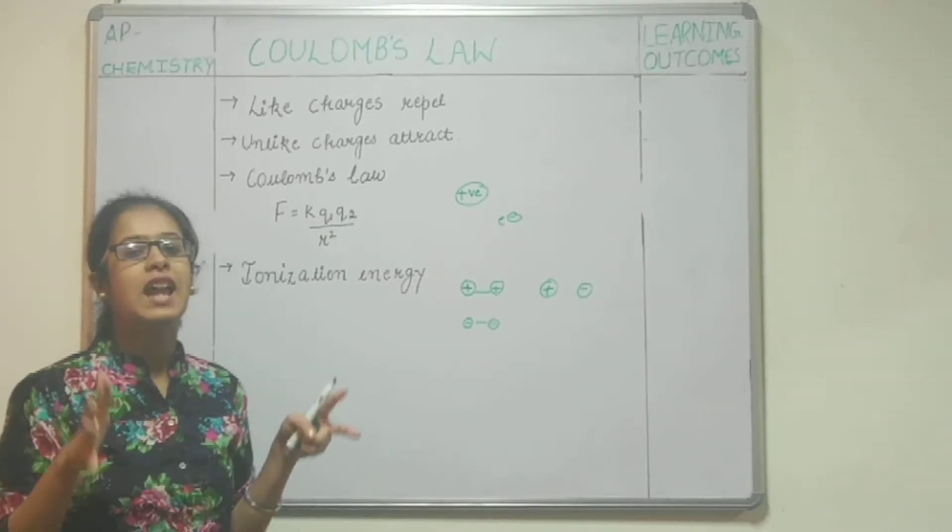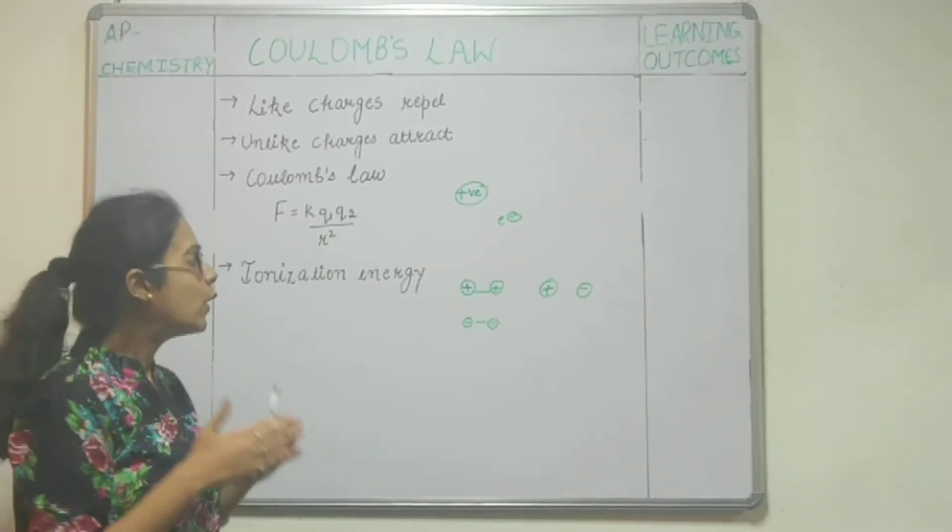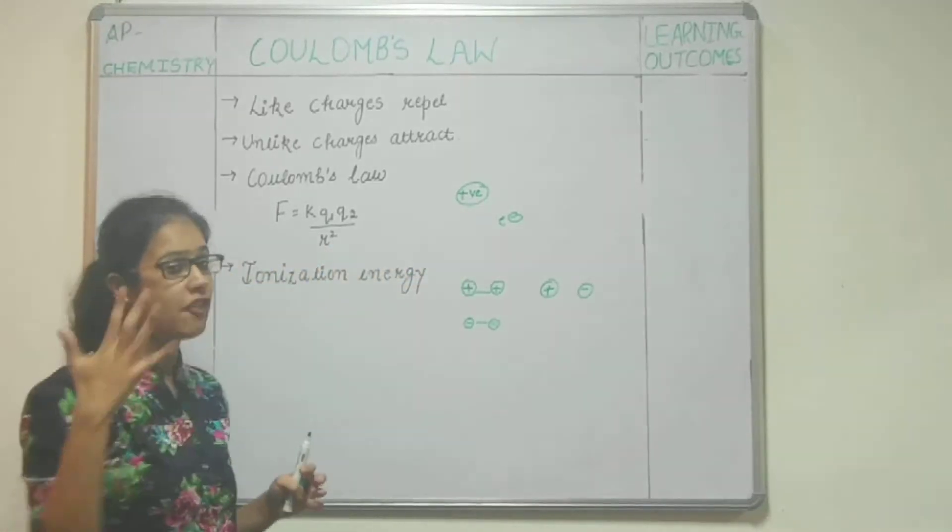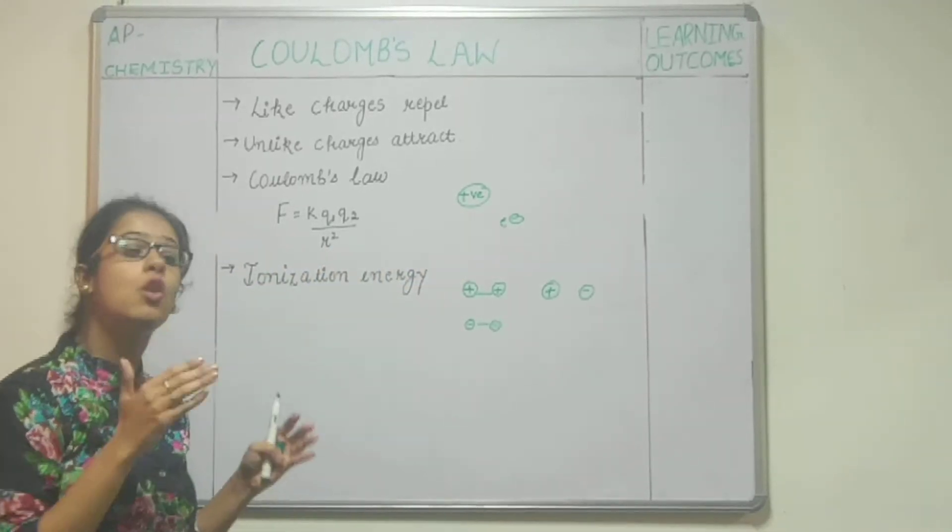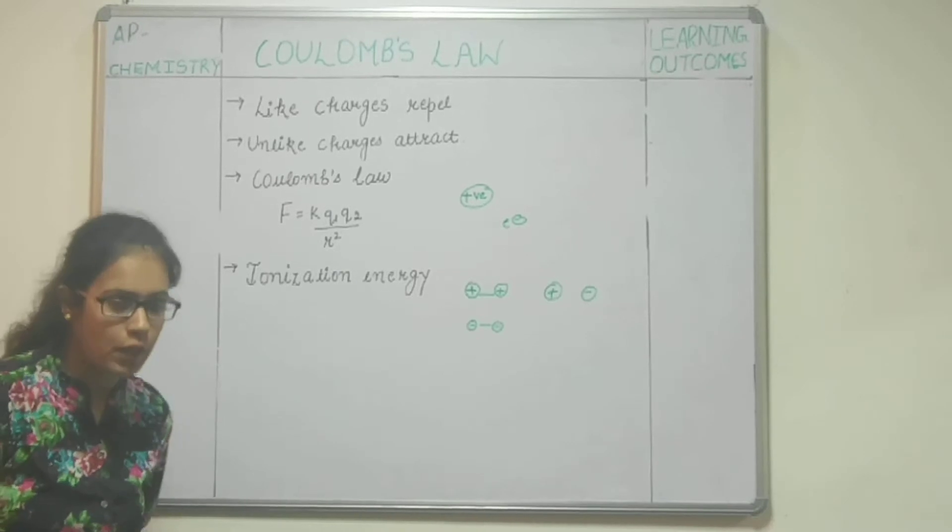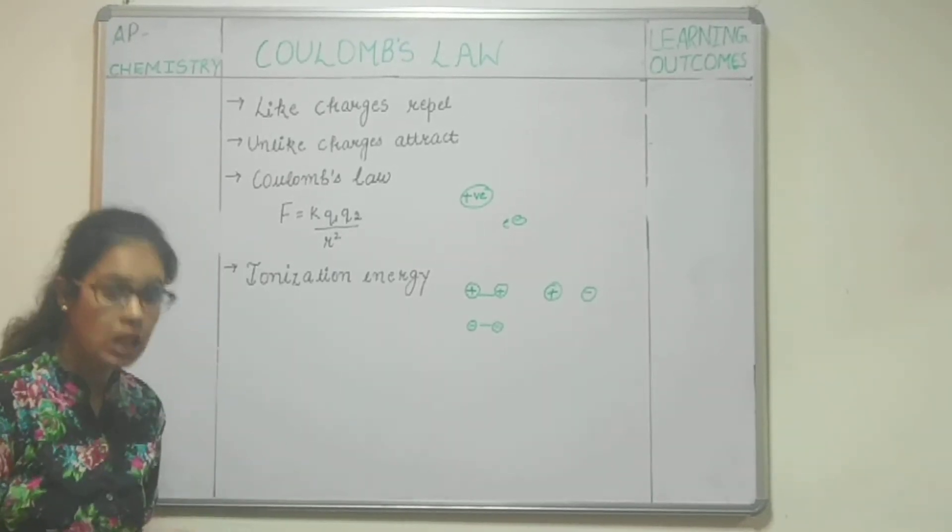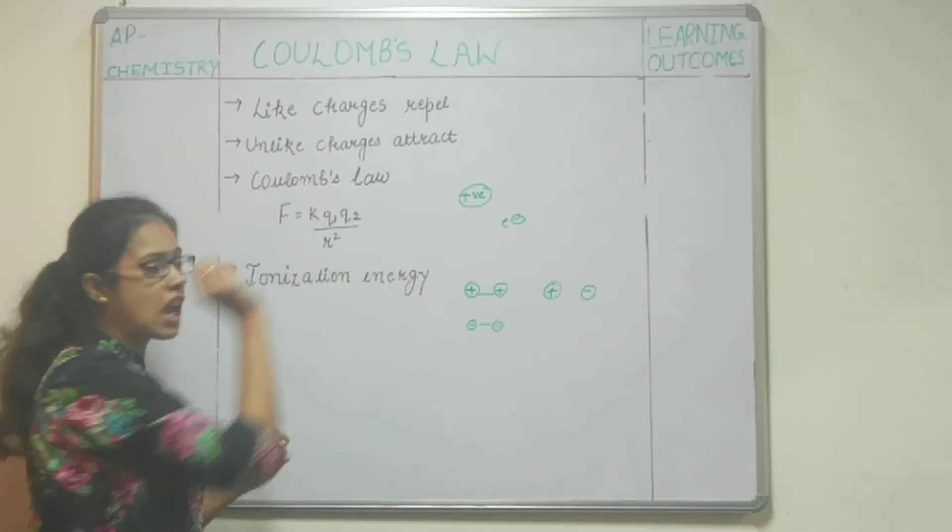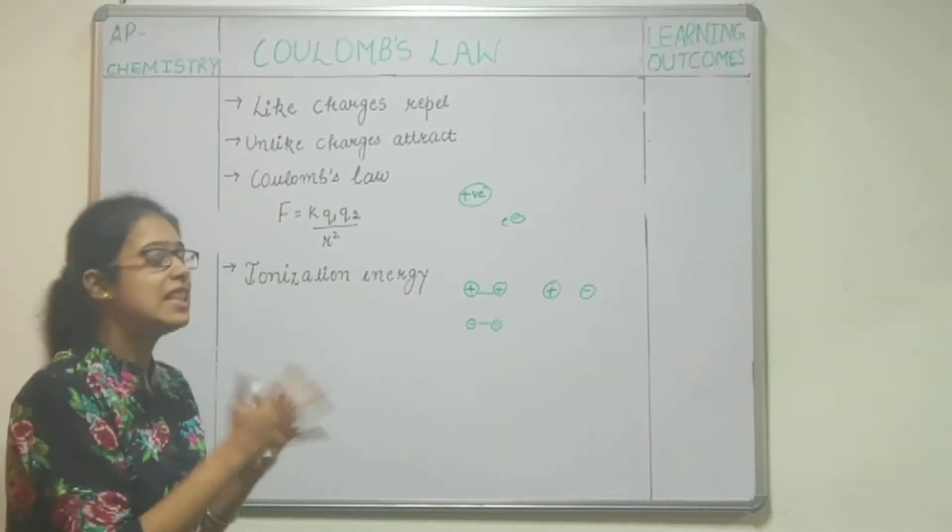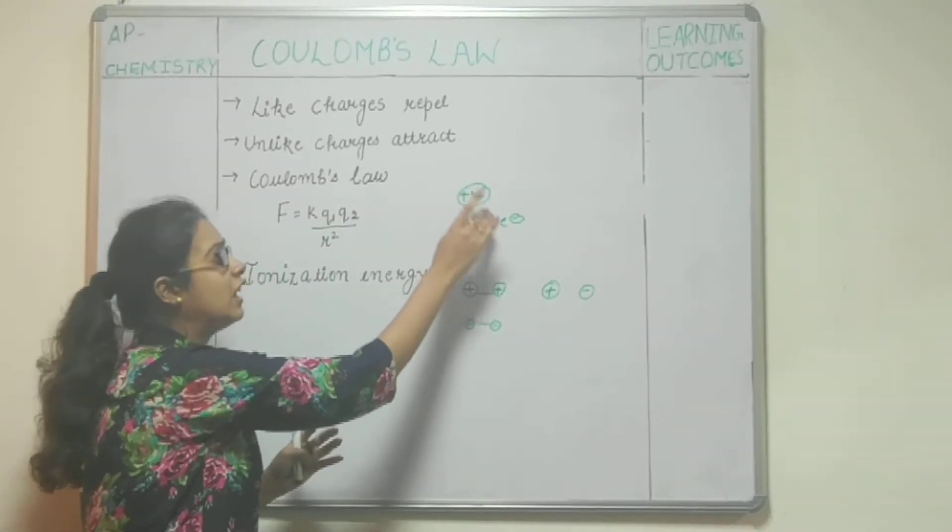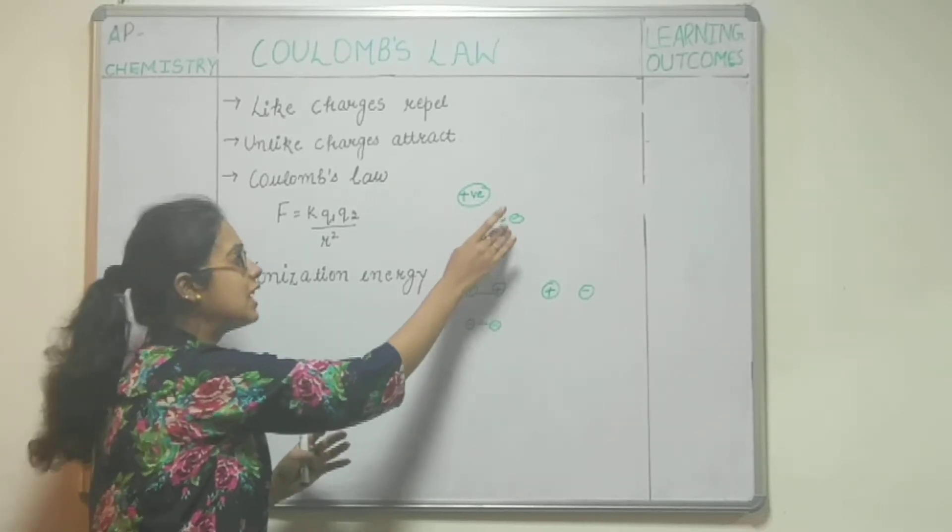When the size of the atom is very large, that electron is very far from the positive charge, so the removal of the electron becomes very simple. But what happens if the size of the atom is very small? Then the positive charge will increase. It will very easily attract this electron and won't allow its removal.